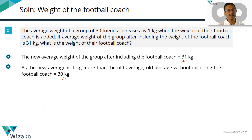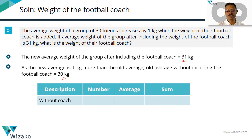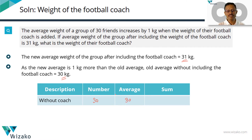Let's get started with the standard framework. It has essentially three columns: number, average, and sum. Without the coach, the group has 30 friends, their average weight is 30 kgs, so the sum of their weight is average times number, which equals 900 kgs. So the sum of the weight of all 30 friends without the coach is 900.